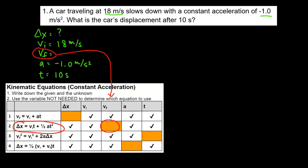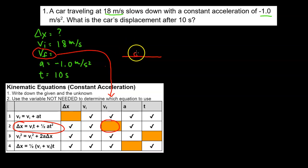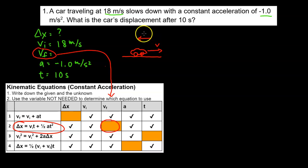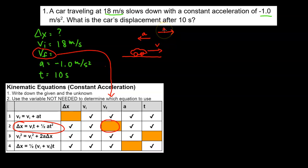Before we continue, it's helpful to draw a simple sketch of the problem — it doesn't have to be very detailed. I'm going to show that the car is moving towards the right; that's the velocity. The acceleration is to the left, and we're going to make the right positive.